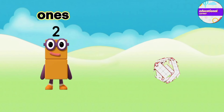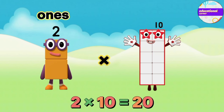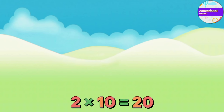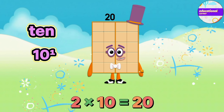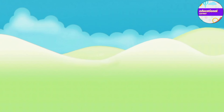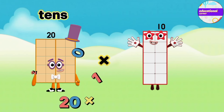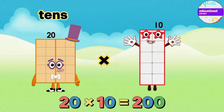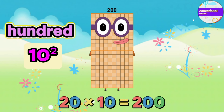2 multiply by 10 equals 20. 20 multiply by 10 equals 200.